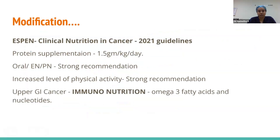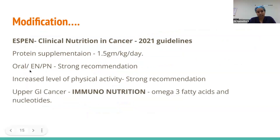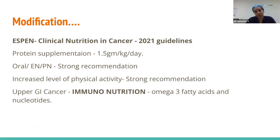The earlier protocols have been modified, and the ESPEN guidelines now state that patients should have protein supplementation of around 1.5 g/kg/day, either orally, enterally, or parenterally — a strong recommendation. Increased physical activity is also a strong recommendation. Patients with upper GI cancer, who are among the most malnourished, must be supplemented with immunonutrition, especially omega-3 fatty acids and nucleotides.